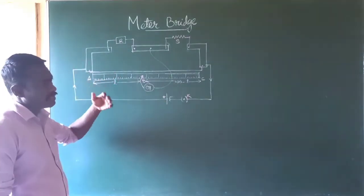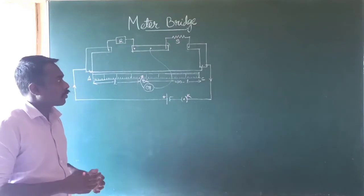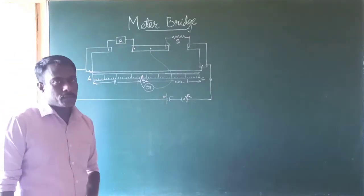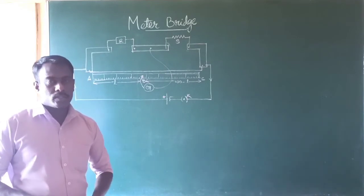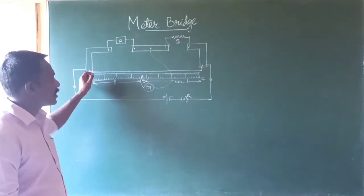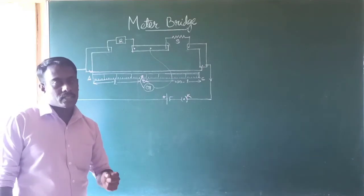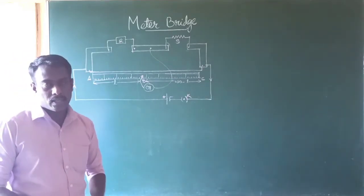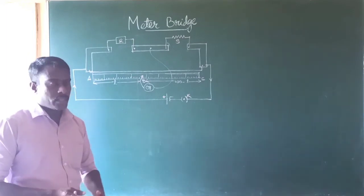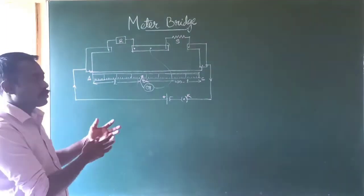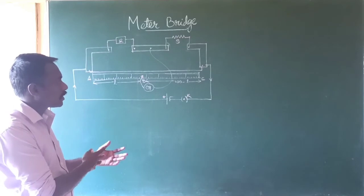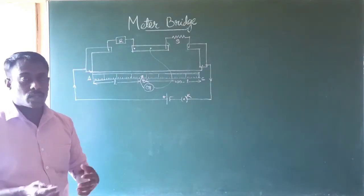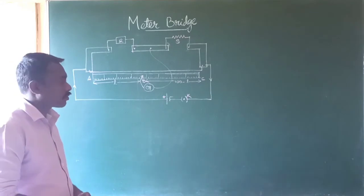This wire is made up of an alloy of constantan or manganin. These alloys are used to make the wire high resistance, so that the temperature coefficient of resistivity (alpha) is very low. That means the resistance of the wire does not change if the temperature of the atmosphere changes — it does not affect the resistance of the wire.